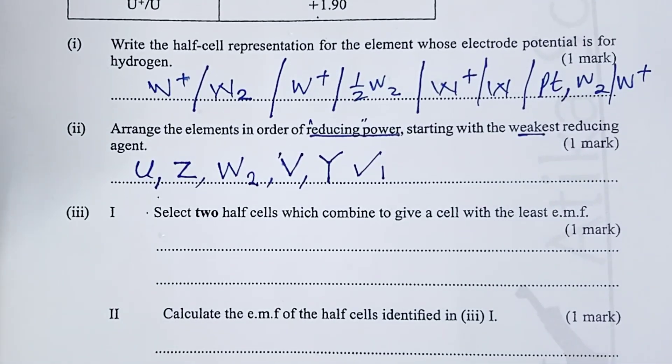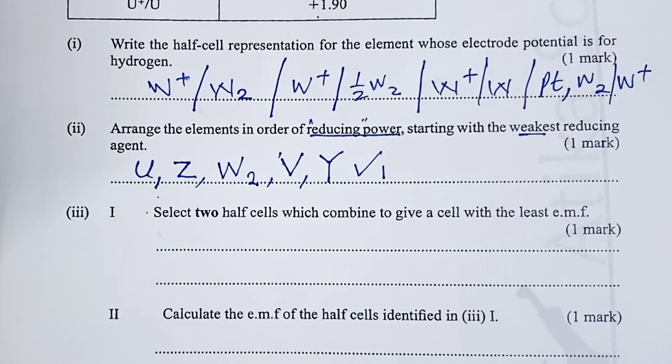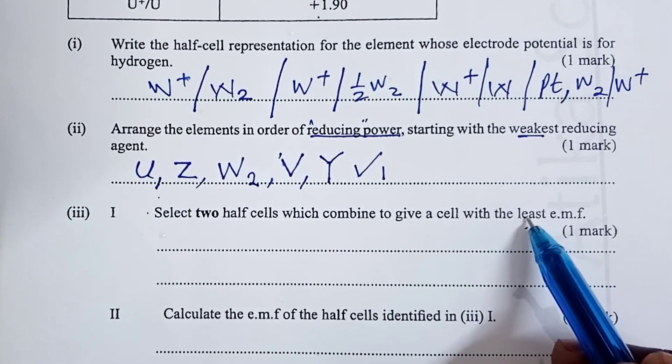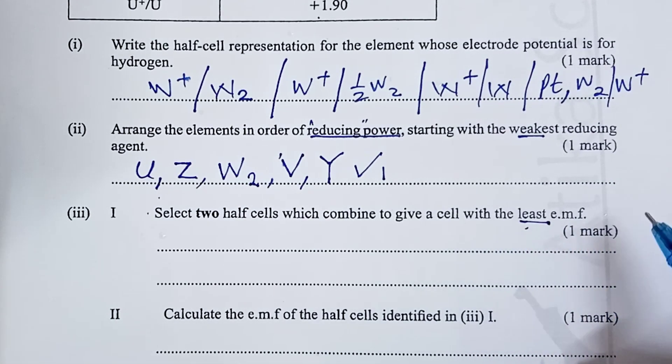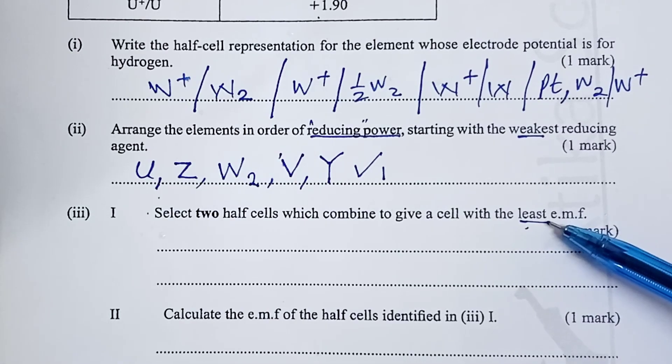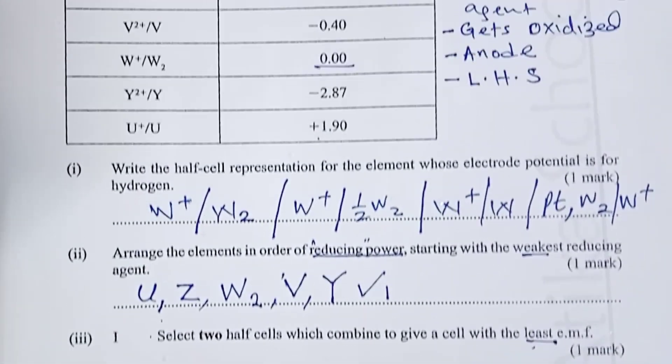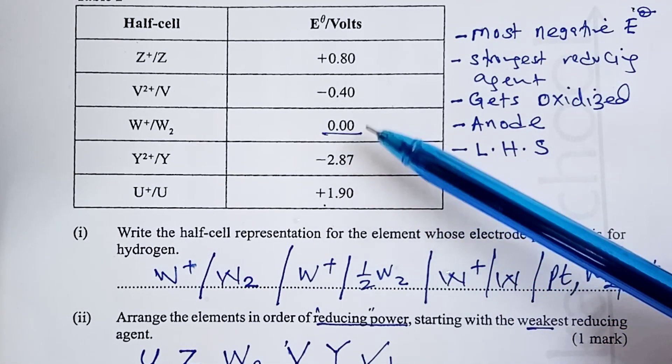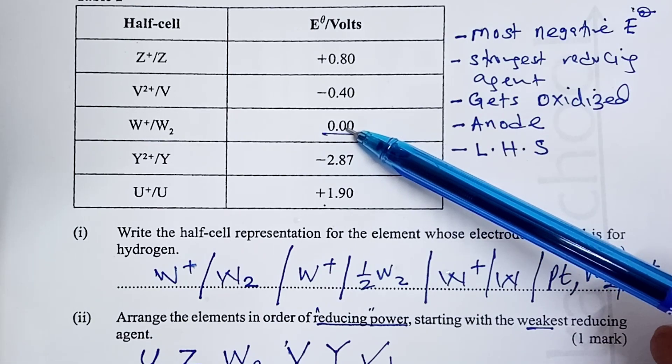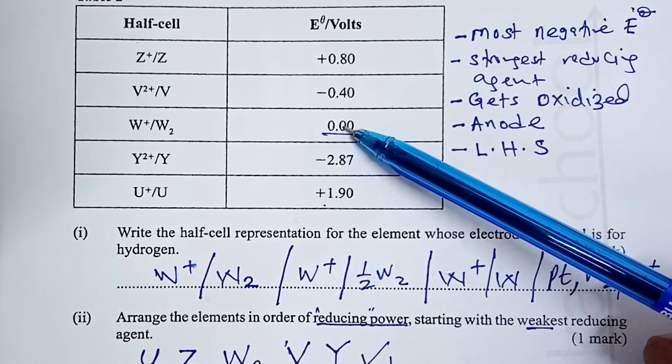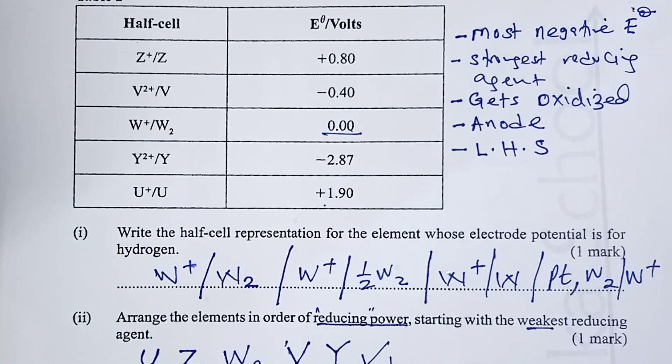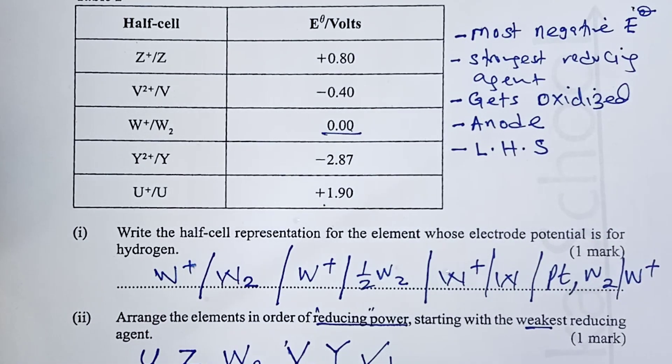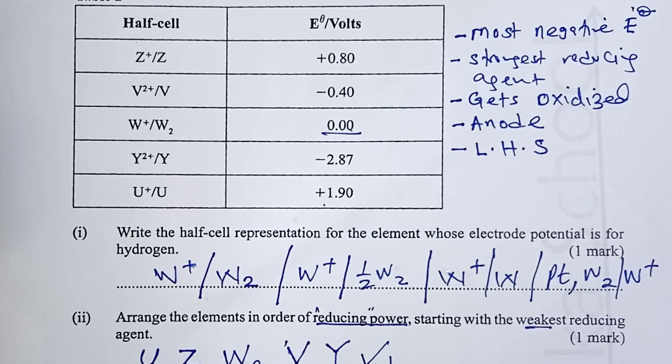Next question. State two half cells which combine to give a cell with the least EMF. Here, because we are asked the least EMF, we shall pick two half cells. One with the least positive. Least positive is zero. And, the one with the least negative. To get least EMF, we have least positive and least negative. Least positive is zero. And, the least negative is V.